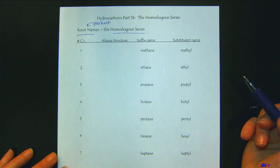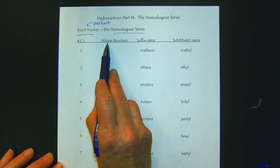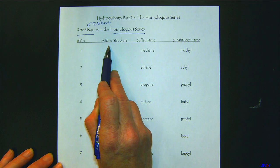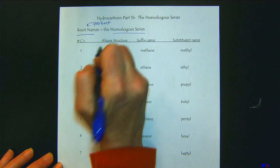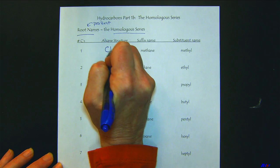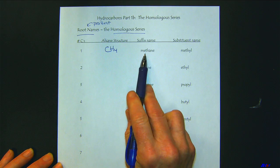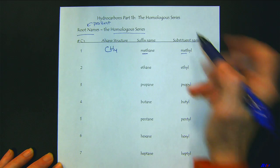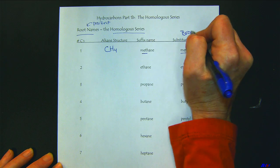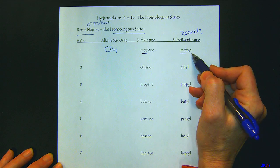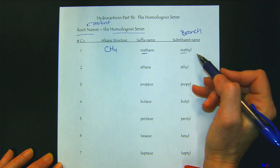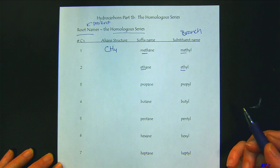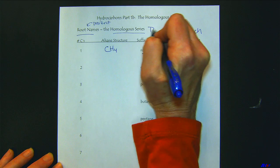For the alkane, this will be the hydrocarbon that has all single bonds. If we have one carbon present, it's referred to as methane. And if it's a substituent or a branch, then we would use methyl. The main thing about the homologous series is we're looking at these prefixes — this is about the prefixes.